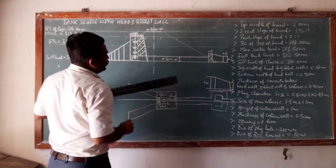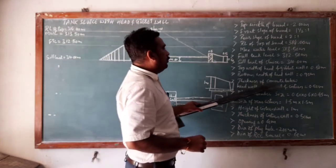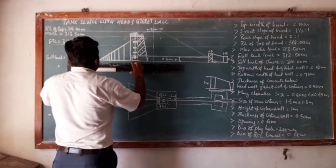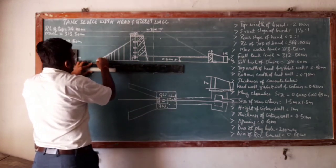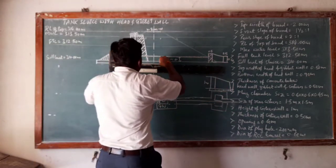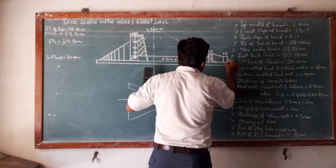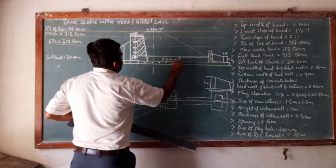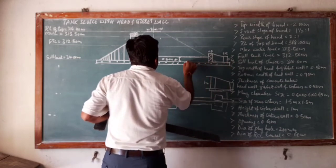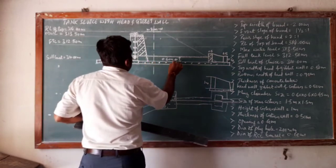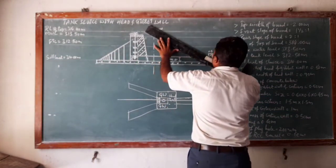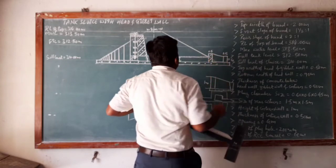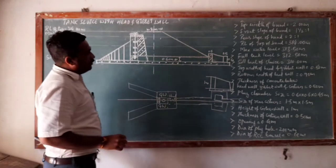What we need to show here is the thickness of the concrete bed below the head wall, gibbet wall, and cistern — for all, it is given as 0.5 meter. Generally, the bed concrete is placed with an offset. Taking a 0.25 or 0.3 meter offset, I am drawing a 0.5 meter thickness line here with an offset on this side also. This is your bed concrete. Now we shall make the lines dark. This completes the longitudinal section of the tank sluice.